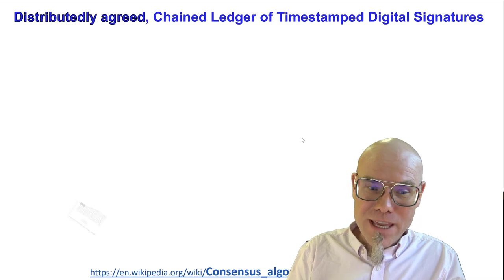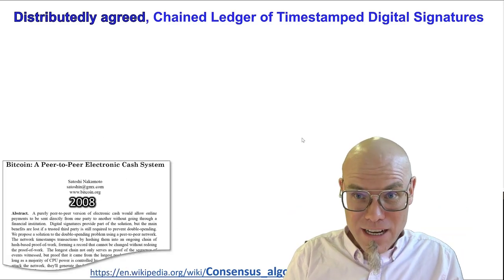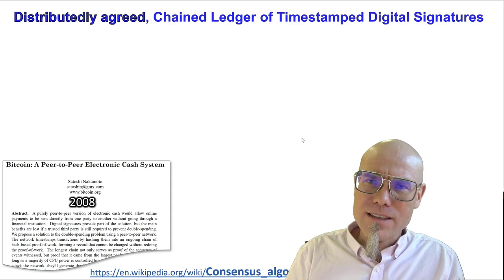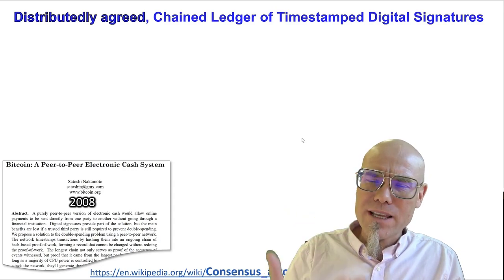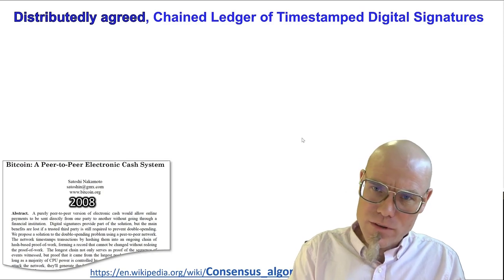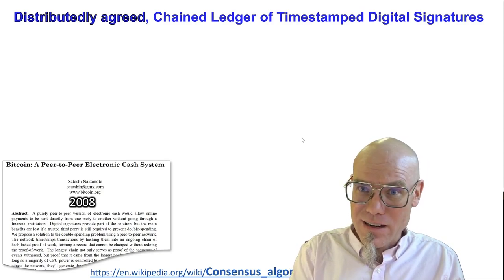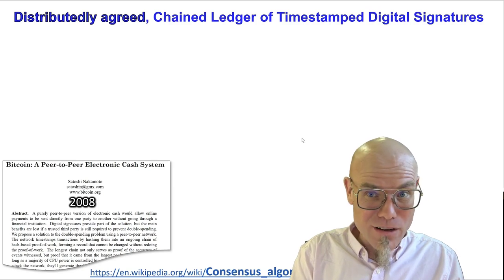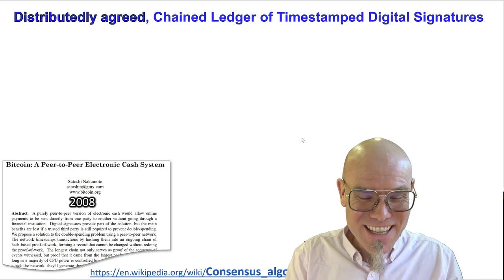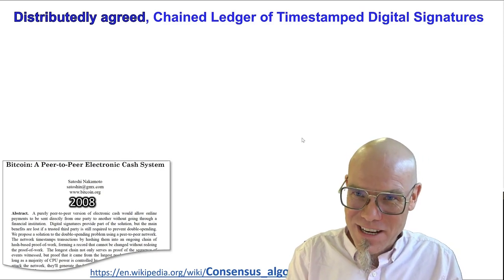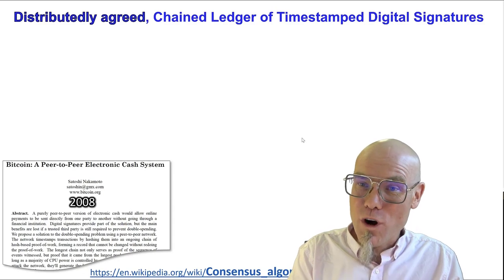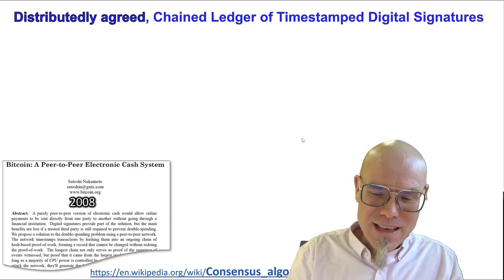The consensus algorithm has been the big innovation from Nakamoto — the Satoshi Nakamoto paper from 2008 — the white paper that introduced the first modern application of what we call the blockchain. It proposed one consensus algorithm, and there are many. There are as many ways that we can agree on as we can disagree on.